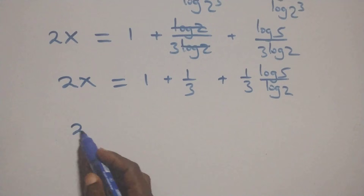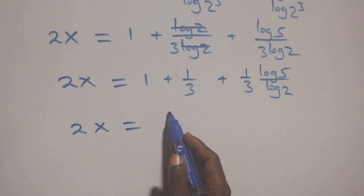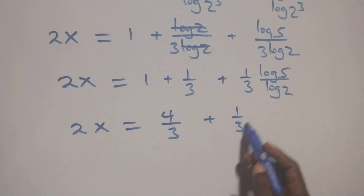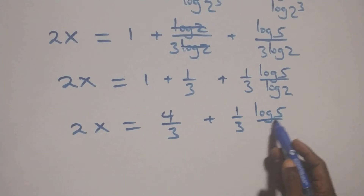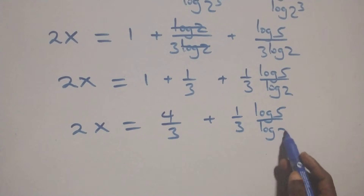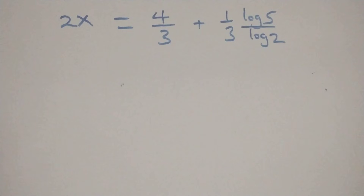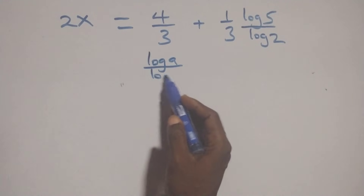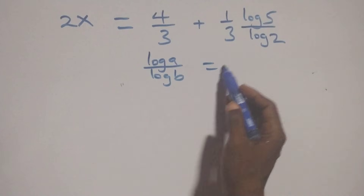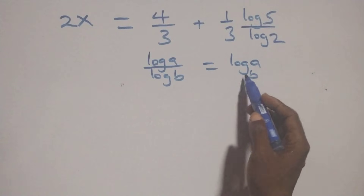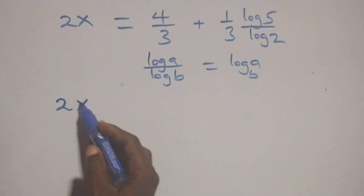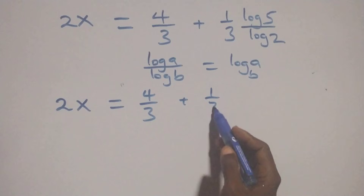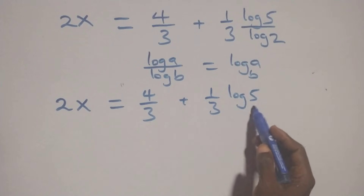Then, 1 plus 1 over 3 equals 4 over 3. Applying the change of base rule — log a over log b is the same as log base b of a — we have 2x equals 4 over 3 plus (1 over 3) times log base 2 of 5.